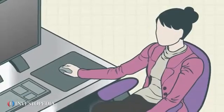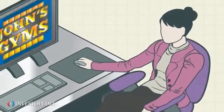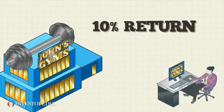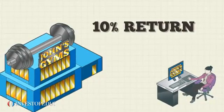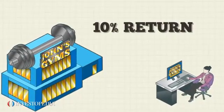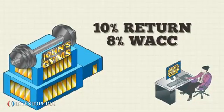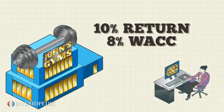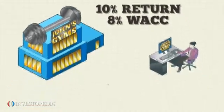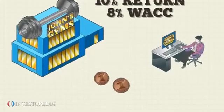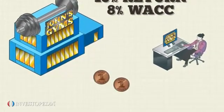Mary is considering an investment in John's Gyms. She determines that the company is producing a 10% return and calculates that the company's WACC is 8%. By subtracting the WACC from the return, she sees that for every dollar John's Gyms spends, it creates 2 cents of value.